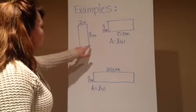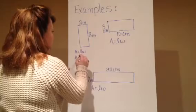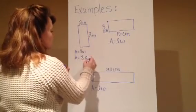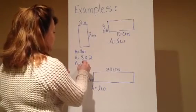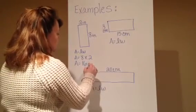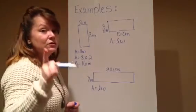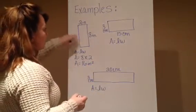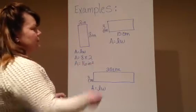So I'm going to say A equals 8 times 2, and my width is 2. So when I multiply those together, 8 times 2 is 16. I look for my label inches, and who remembers the next part of that? Inches squared. So my area for this particular rectangle is 16 inches squared.